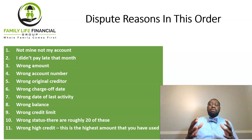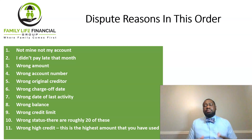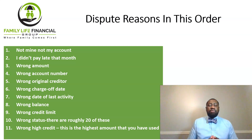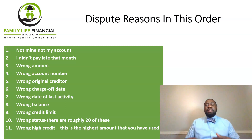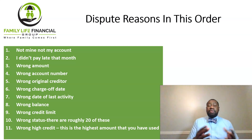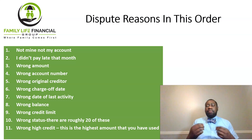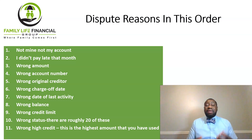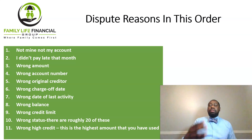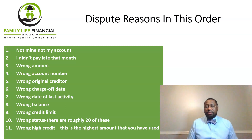When you get ready to dispute your credit, you want to start with the first reason: 'not mine' or 'not my account,' because it's up to the bureau to prove it otherwise. If they come back and verify it as valid, then you move to a different reason, such as wrong amount or wrong account number.